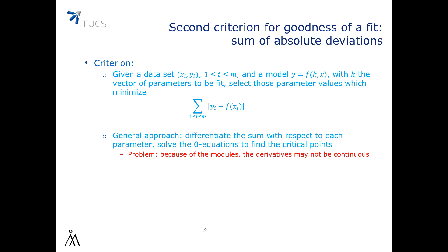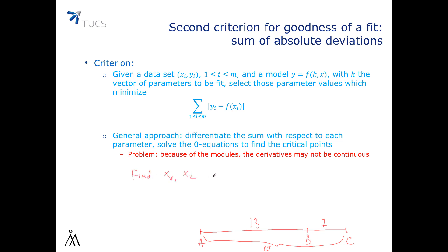One has to be careful because the absolute values in this sum will make the derivatives discontinuous at points where the absolute values equal zero. This can often be problematic in practice. For our example with segment AC, with data 13 for AB, 7 for BC, and 19 for the total, we must find x1 and x2 both ≥ 0 such that |x1 − 13| + |x2 − 7| + |x1 + x2 − 19| is minimal.